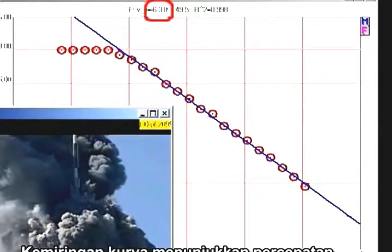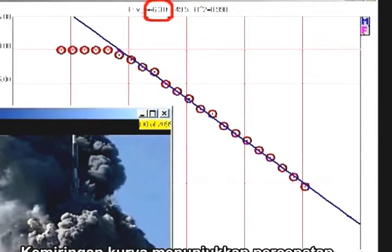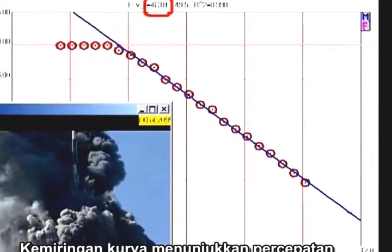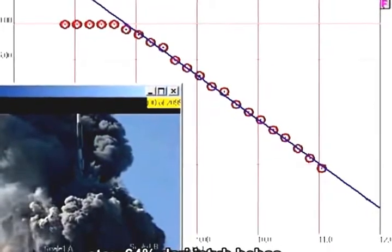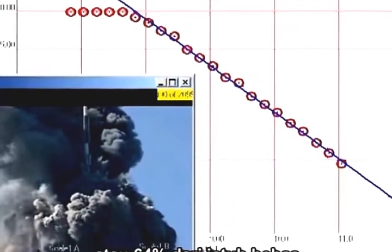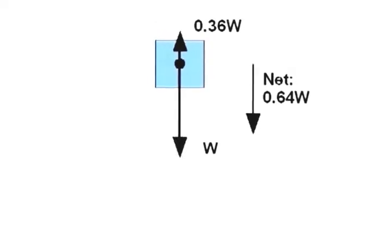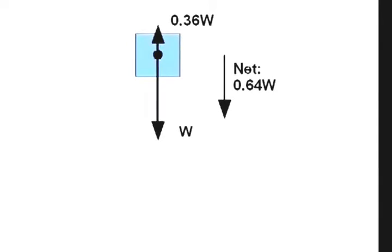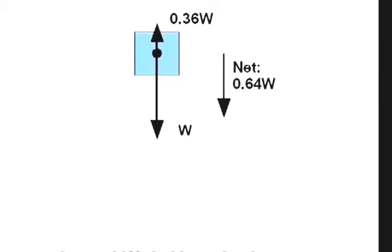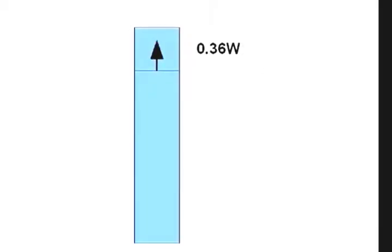The slope of the graph in downward acceleration is 6.3 meters per second squared downward, which is 64% of g. In other words, once it starts falling, the upward resisting force is only 36% of the weight of the structure above. So far, so bad.